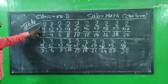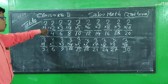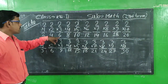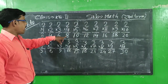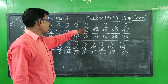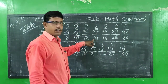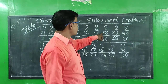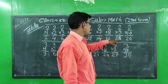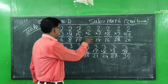Table number 2 again. 2 into 1 is 2. 2 into 2 is equal to 4. 2 into 3 is equal to 6. 2 into 4 is equal to 8. 2 into 5 is equal to 10. 2 into 6 is equal to 12. 2 into 7 is equal to 14. 2 into 8 is equal to 16. 2 into 9 is equal to 18. 2 into 10 is equal to 20. Correct?